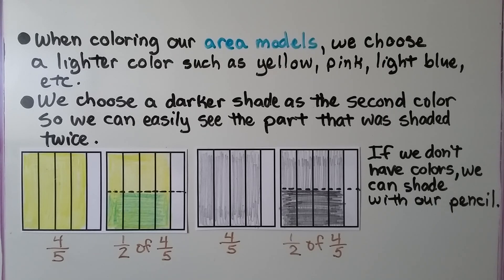When coloring our area models, we choose a lighter color — such as yellow, pink, or light blue — for the first shading. We then choose a darker shade as the second color so we can easily see the part that was shaded twice.